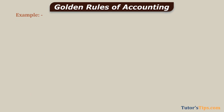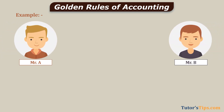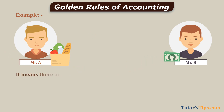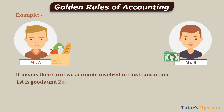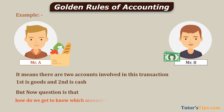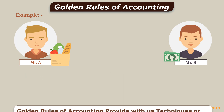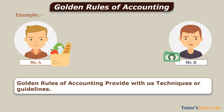We will explain it with an example. Suppose Mr. A purchases goods from Mr. B. From Mr. A's point of view, he got goods but spent his cash. It means there are two accounts involved in this transaction: first is goods and second is cash. The question is how do we know which account will be debited and which will be credited? The Golden Rules of Accounting provide us with the technique or guideline to determine the debited and credited account.